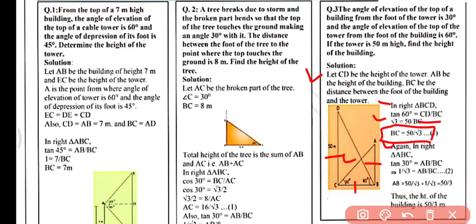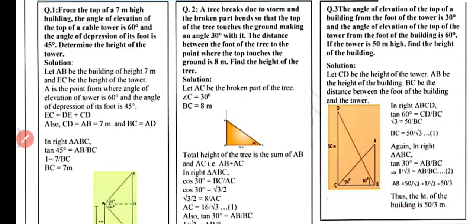Now in right-angle triangle ABC, tan30° = AB/BC, so 1/√3 = AB/(50/√3), giving AB = 50/√3 × 1/√3 = 50/3. After simplifying, the height of the building is 50/3 meters.